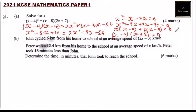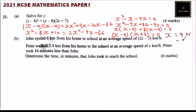This gives us x minus 9 equals 0 and x plus 8 equals 0, so x equals 9 or x equals minus 8. Those are the values that satisfy our equation.